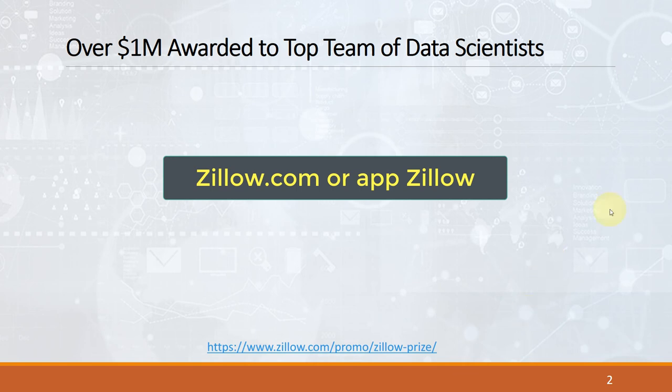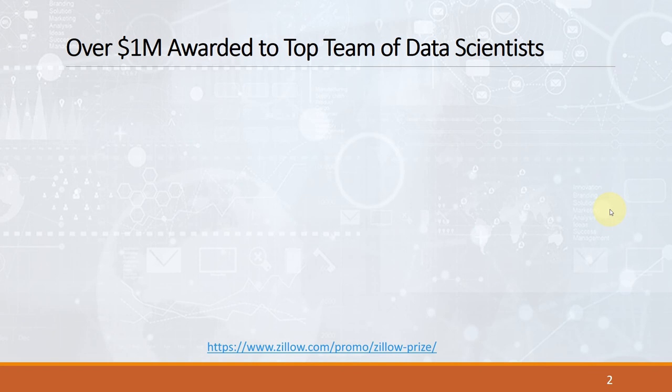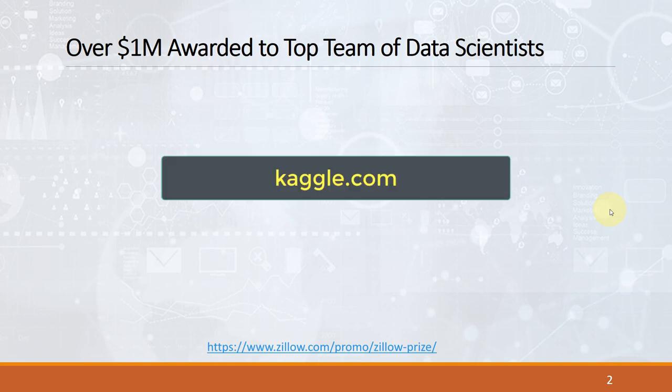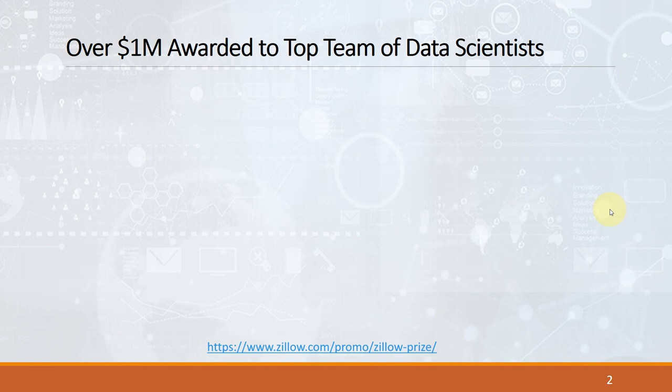Zillow is a real estate tech company which archives and organizes information about every single real estate property and makes them available in their app, which is available on every major smartphone platform. Recently, Zillow organized a data science competition on Kaggle.com. Kaggle is a platform for data science competitions that hosts tons of practice datasets, tutorials, and practice projects for you to learn about data science — and all of them are free. Zillow offered one million dollars to the top team able to design and train a model predicting sales prices of a list of random properties with a margin of error at least 10% smaller than their own algorithm.